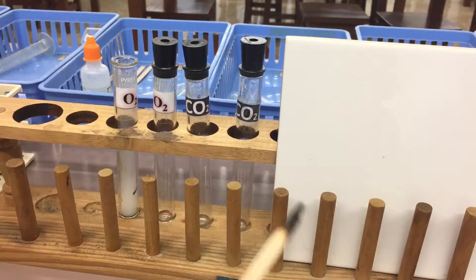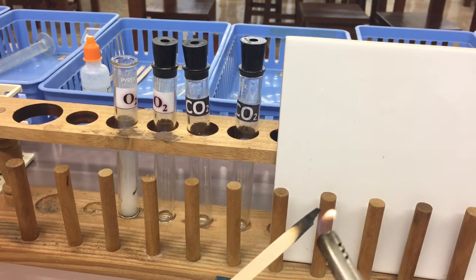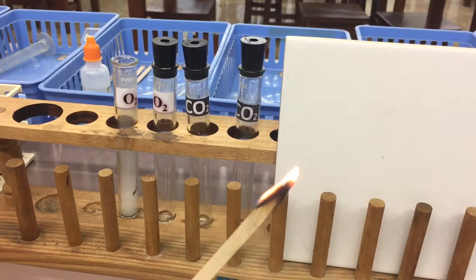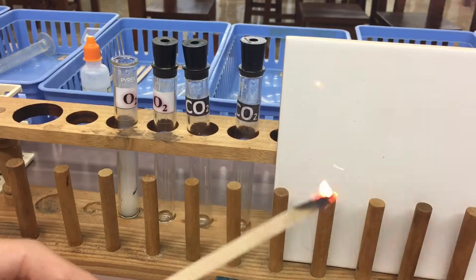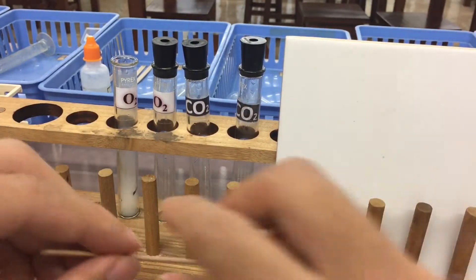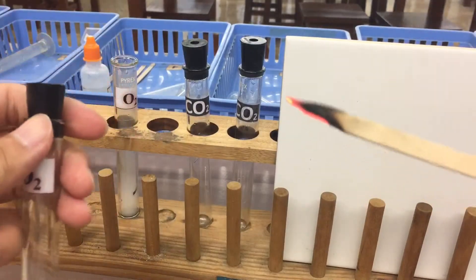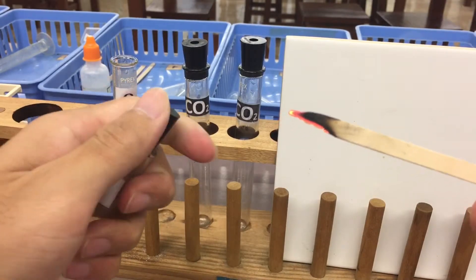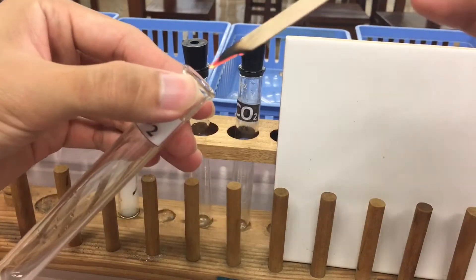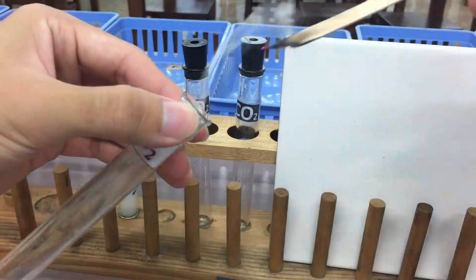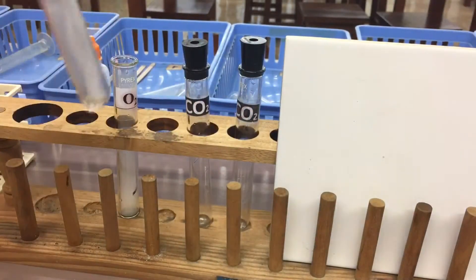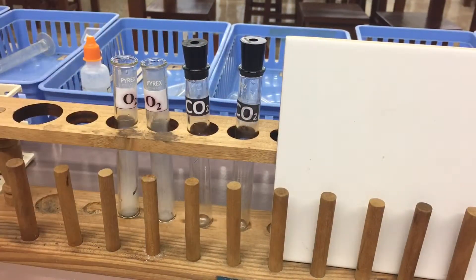We have the second method, which is glowing splint. For a glowing splint, we just let the fire go off. There is no fire on the glowing splint, but after we put it inside the oxygen, because oxygen supports burning, the glowing splint will relight. You can see that the fire relights when we put the glowing splint into the oxygen.